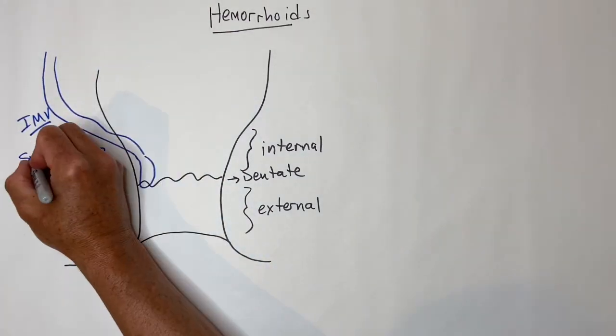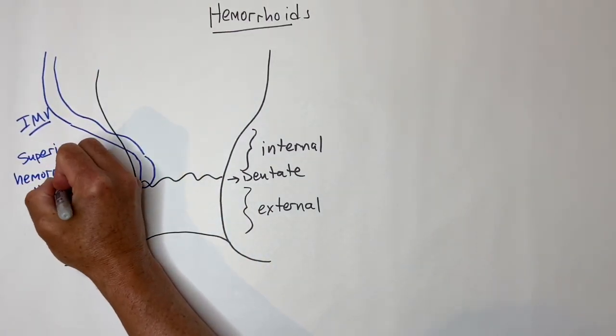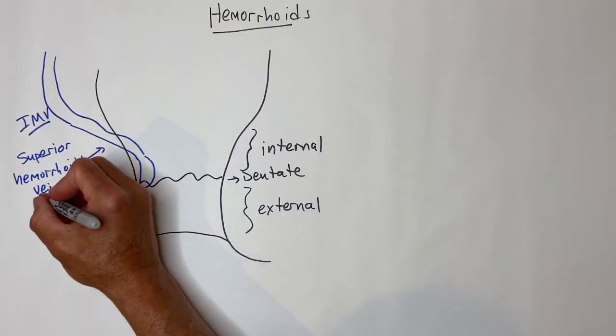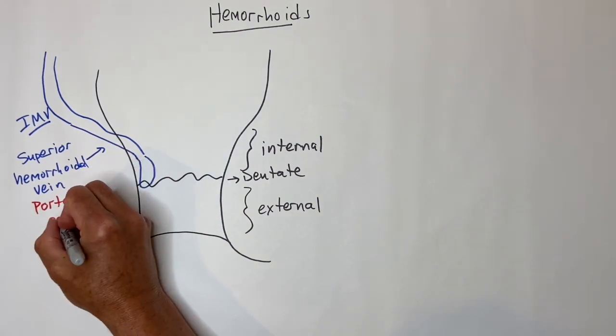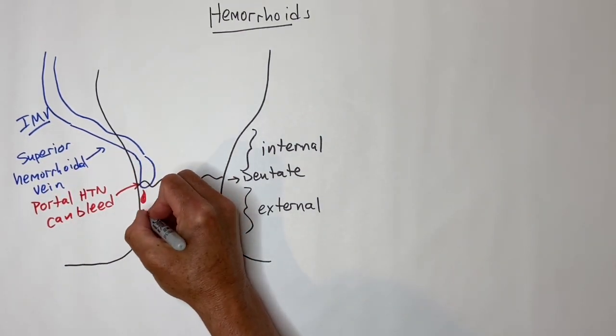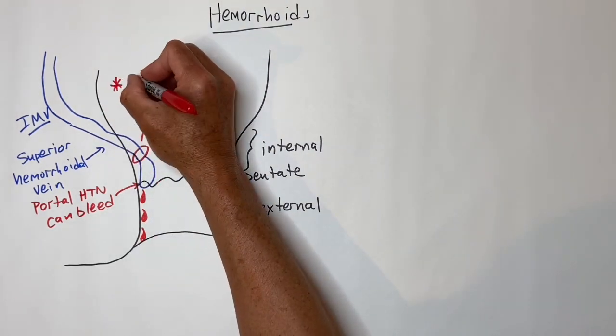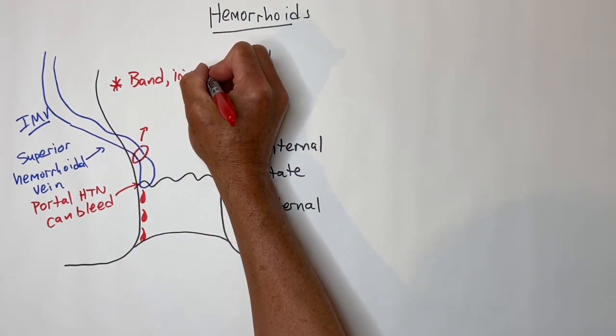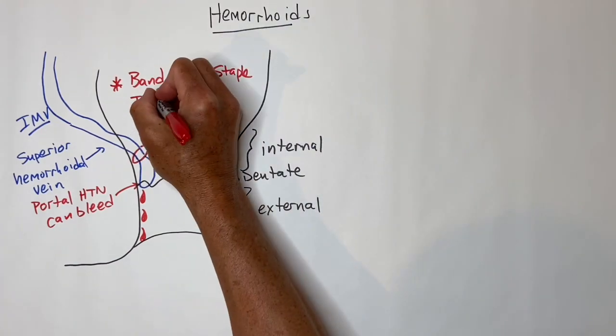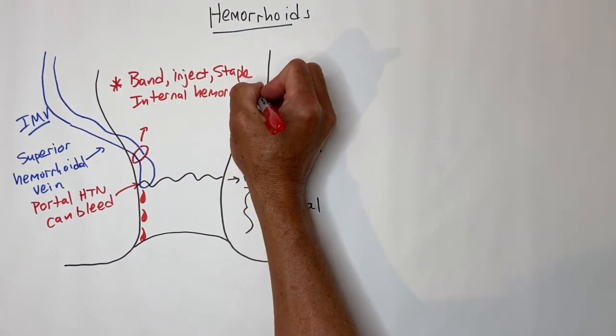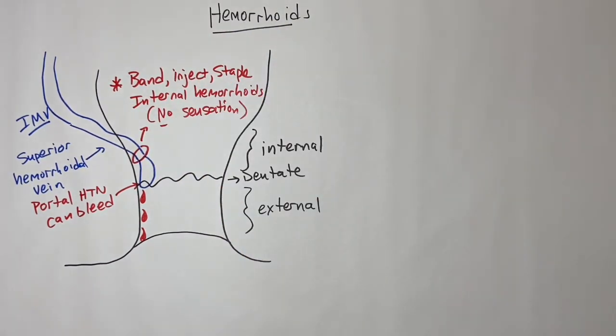Cirrhotics with portal hypertension get internal hemorrhoids from pressure in the IMV down to the superior hemorrhoidal veins and can have massive internal hemorrhoidal bleeding. Internal hemorrhoids are the ones you band, inject, or staple, not the external ones because that would hurt.